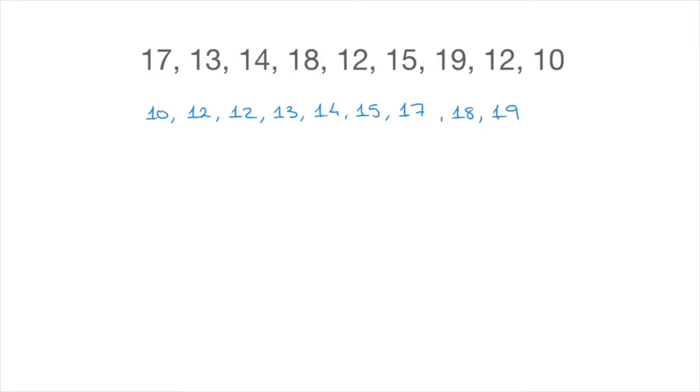Now, one way of finding the median, and you may have seen this before, is to work our way inwards from each end of the list of data until we find the middle value. And typically, that method would look like this. Starting from the 10 and the 19, we cross those out.